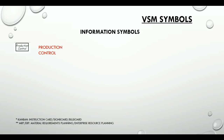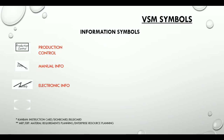The next category is information symbols. The production control box represents a central production scheduling or control department, person, or operation. The manual info icon is a straight thin arrow showing the flow of information from memos, reports, or conversation. The electronic info icon is a wiggle arrow representing electronic flow such as EDI, internet, intranets, or VANs. The production kanban icon triggers production of a predefined number of parts. The withdrawal kanban icon represents a card or device that instructs a material handler to transfer parts from a supermarket to the receiving process.